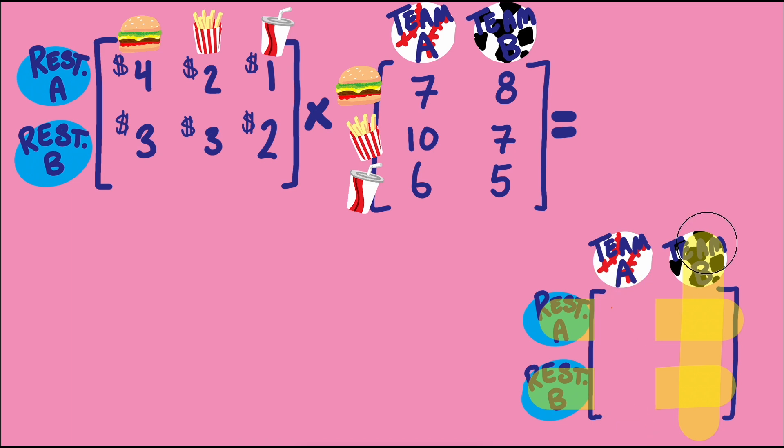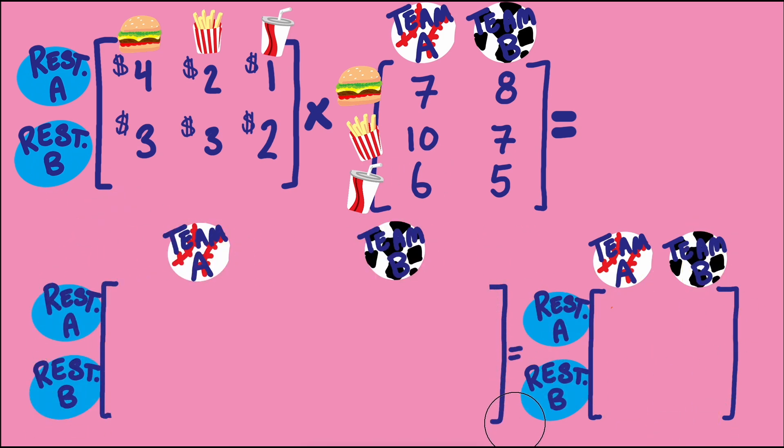Now it's easier to keep track of all of the multiplications and sums we need to do for this problem. To find the cost for team A at restaurant A, we multiply the entries for restaurant A with the entries of team A, then add up all those values to get the particular total.